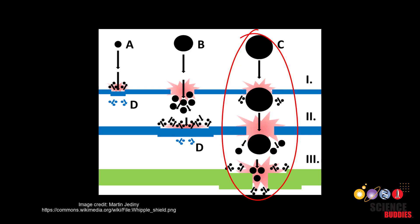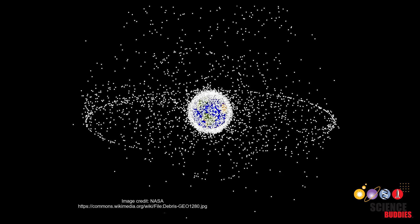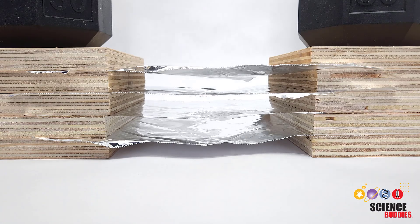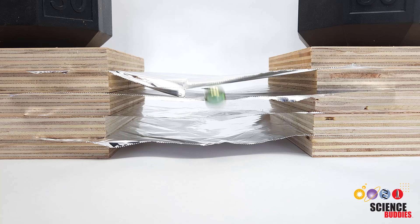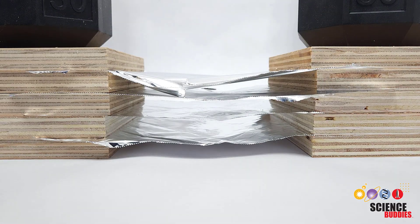This doesn't necessarily help protect against large debris, but it does help with smaller pieces of debris that are too small to track. In the rest of this video I'll show you how you can make your own model Whipple shield and use it for a science project.